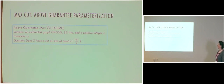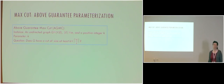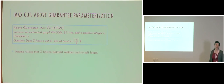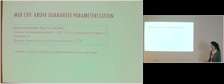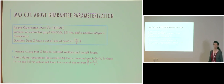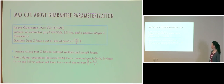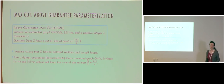This leads to the definition of above-guarantee MaxCut. We are given an undirected graph G with m edges and a positive integer K, and now we ask does G have a cut of size at least K plus m over 2. We assume without loss of generality that G has no isolated vertices and no self-loops, since none of them can contribute to the size of the cut. We use a tighter guarantee due to Edwards and Erdős.